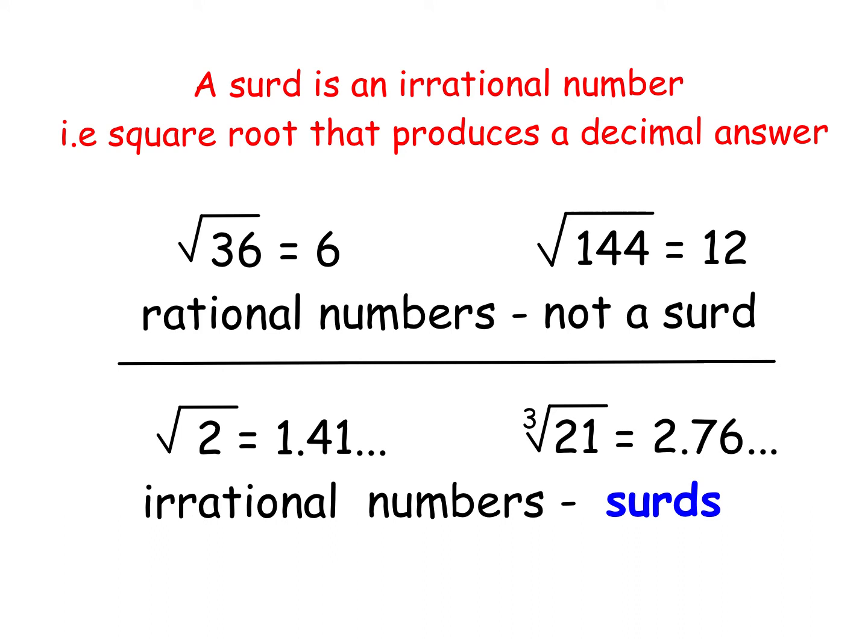However, these ones here, square root of 2 is 1.41 to two decimal places, and the cube root of 21 is 2.76 to two decimal places. These are irrational numbers. They don't give you exact answers, the answers are decimals, so they are surds. So in simplest terms, a surd is the square root of a number that doesn't give a nice exact answer.